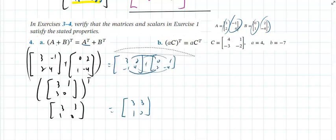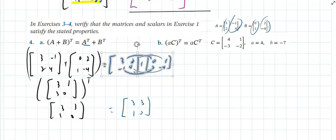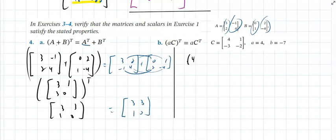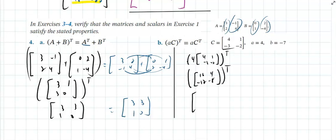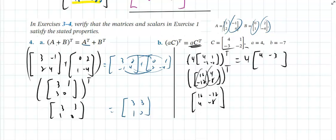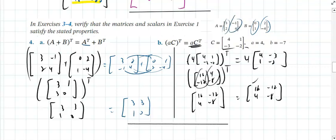Verify another scalar-transpose property: (αC)ᵀ = α(Cᵀ). With scalar α = 4 and C = [4, 1; −3, −2]: αC = [16, 4; −12, −8], and its transpose is [16, −12; 4, −8]. Alternatively, Cᵀ = [4, −3; 1, −2], multiplied by 4 gives [16, −12; 4, −8]. They match. This section is mostly verification work.